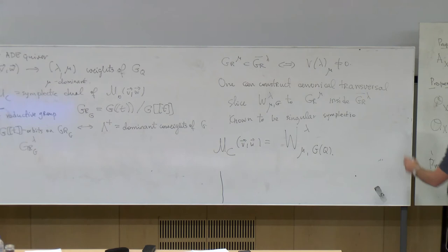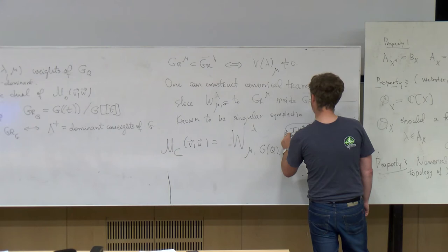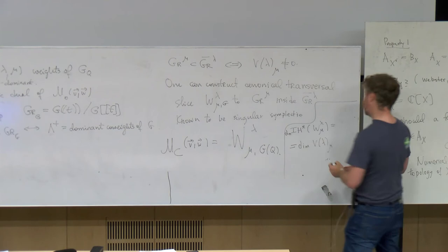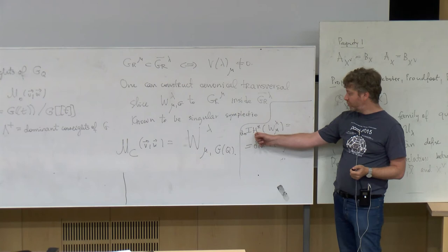Gr_G^mu lies in the closure if and only if V(lambda, mu) is nonzero. One can construct a canonical transversal slice W^{lambda,mu} to Gr_G^mu inside the closure of Gr_G^lambda, and it is known to be singular symplectic — you can construct a Poisson structure on it and generically it will be symplectic. For instance, all ADE surface singularities arise in this way for some particular cases. Assuming mu is also dominant, the claim is that MC in the case of V, W is equal to W^{lambda,mu}_{G_Q}.